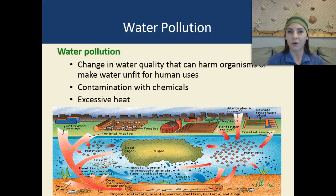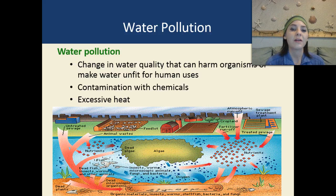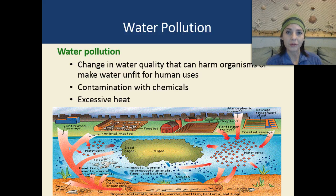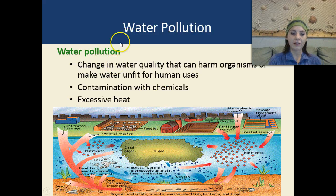So just what is water pollution? By definition, it's a change in water quality that can harm organisms or make water unfit for use by us as well as other animals and plants — contamination with chemicals, as well as excessive heat. Another type of water pollution not listed would actually be noise pollution, and that can affect marine mammals and their migratory patterns as well as their breeding patterns.